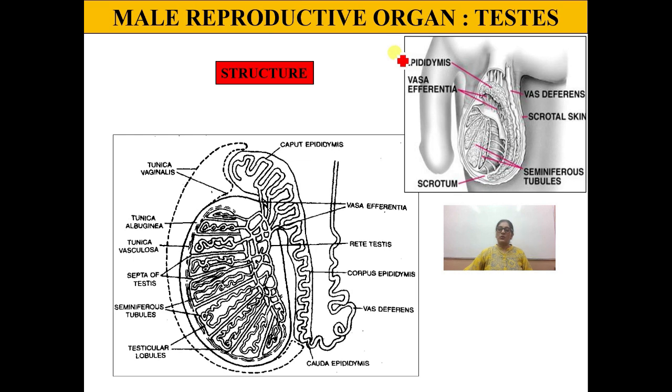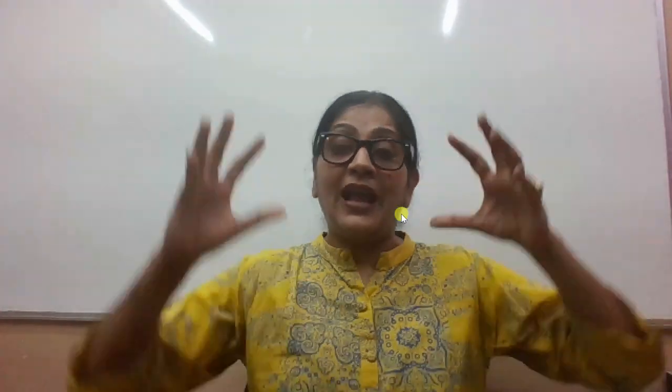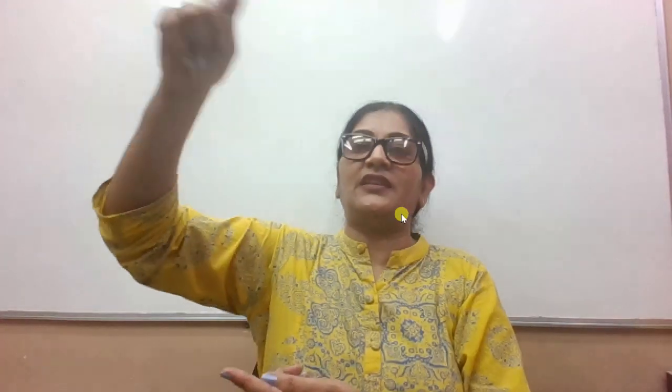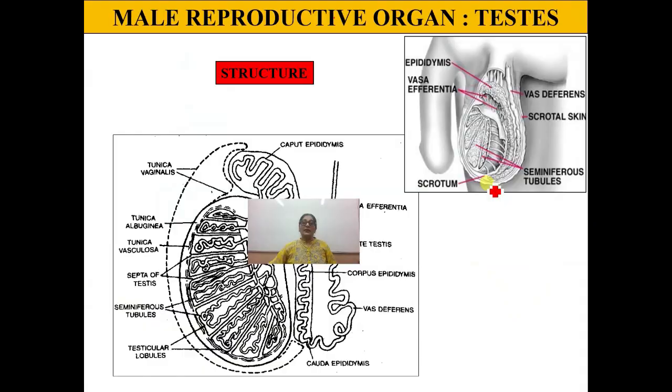That was just for your interest. To summarize: the testis is extra-abdominal in position, found in a sac-like structure called the scrotum, where the temperature is 2 to 2.5 degrees lower than the body temperature — which is ideal for spermatogenesis. In humans, the testis starts abdominal in the embryo, but permanently descends to the scrotum around the fifth month, making us continuous breeders.